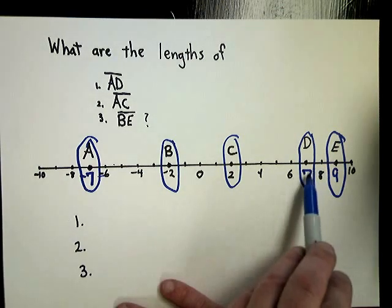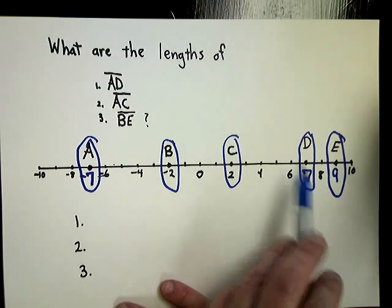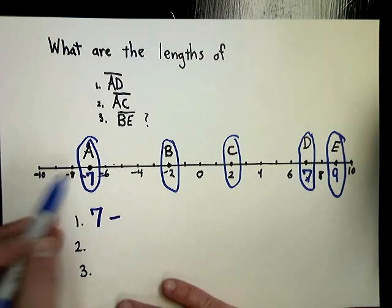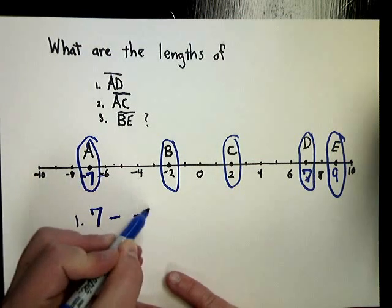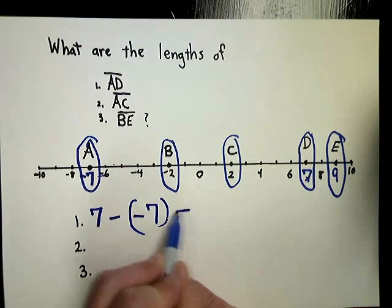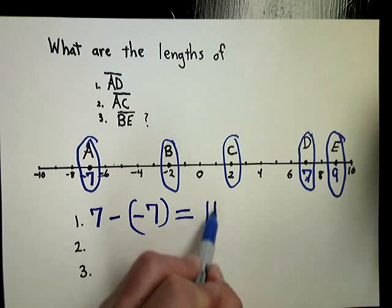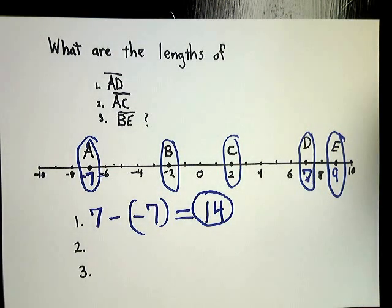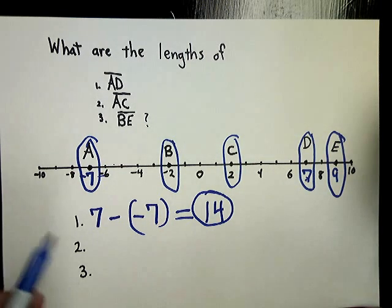But the easier way to do it is start with the number on the right, so the D in this case, which would be positive seven, and then I need to subtract the second number, so in this case, negative seven. Seven minus negative seven is fourteen. And for a length, you should always get a positive answer. If you get a negative length, that doesn't really make any sense. I mean, it can go down, but if you're measuring something, you won't get a negative number unless you're talking about direction, which we're not in this case.